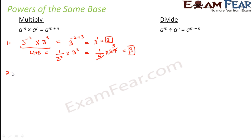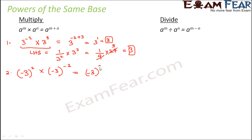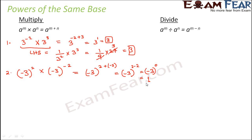Another example: minus 3 to the power 2 multiplied by minus 3 to the power minus 2. The bases are both minus 3, so this equals minus 3 to the power 2 plus minus 2, which is minus 3 to the power 0. Anything to the power 0 equals 1.